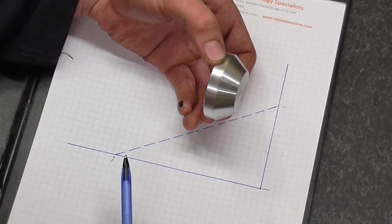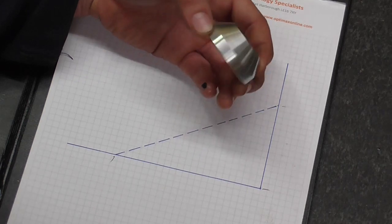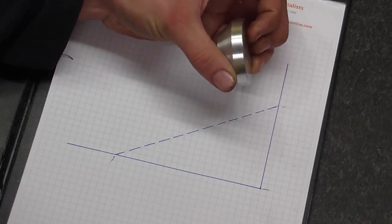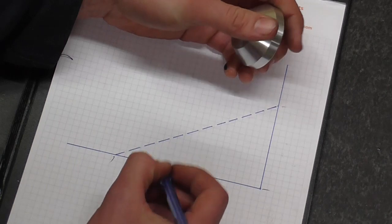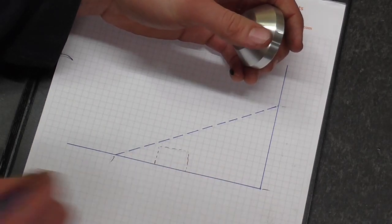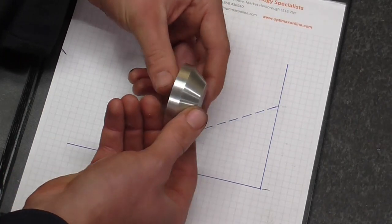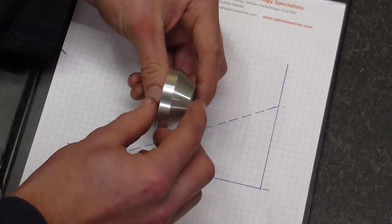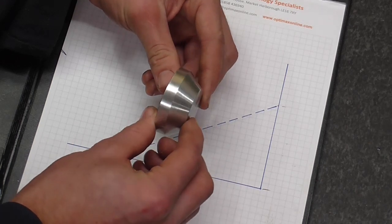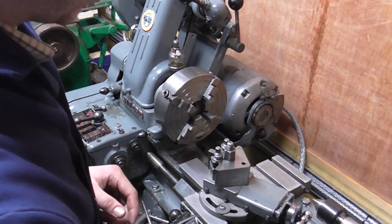So we're going to the lathe where I have already turned the face and the diameter. You'll notice that I've actually put a groove in here, what is effectively rough material at the moment, so that when I flip it I've got something to indicate to sort any axial run out out. I'm almost ready to put this back in the chuck and carry on, but before I do I'm going to set the top slide angle.